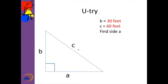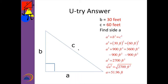Here's a U-try. This time we're looking for A and we have B and C. Teacher, pause the video, have the students work the problem, share with their partner and compare, then call on non-volunteers. Welcome back. I substituted: B is 30 feet, C is 60 feet. 30 squared is 900 feet squared. 60 squared is 3,600 feet squared. I subtracted 900 feet squared from both sides to get A squared by itself. 3,600 minus 900 is 2,700. Took the square root of both sides, rounded to two decimal places: A equals 51.96 feet.